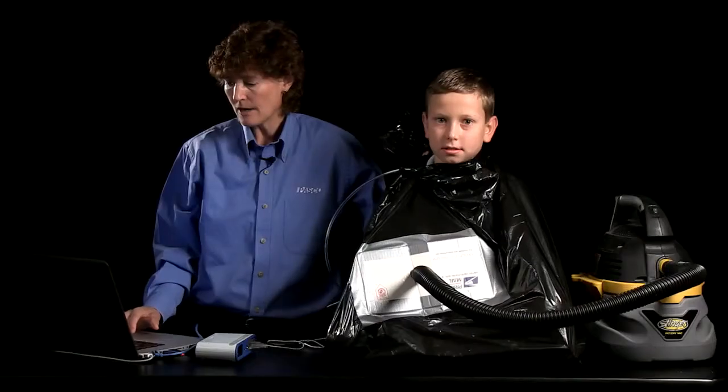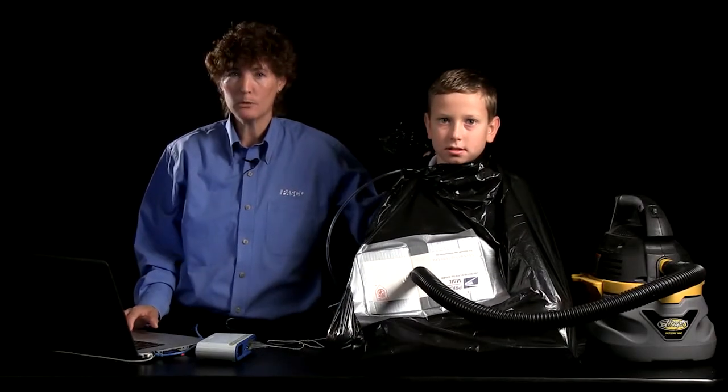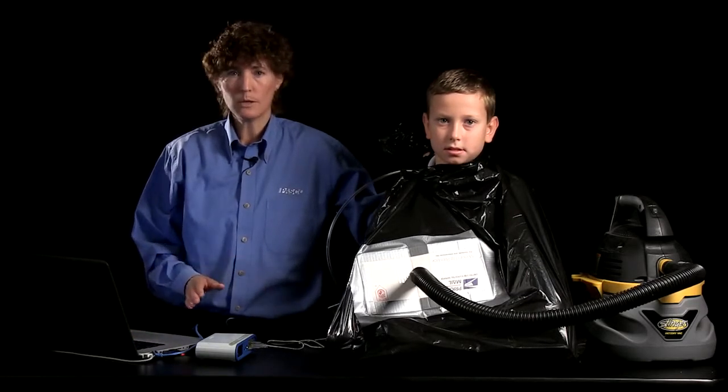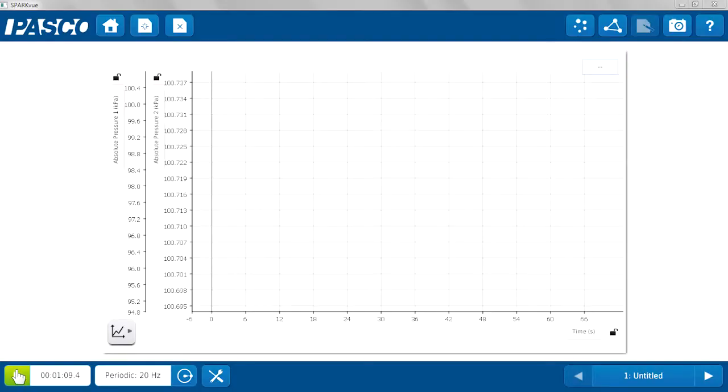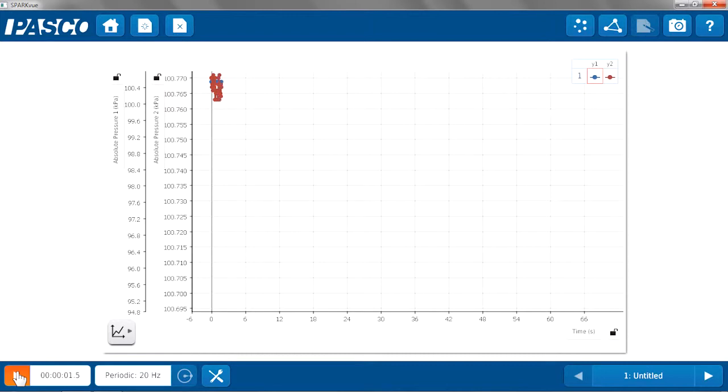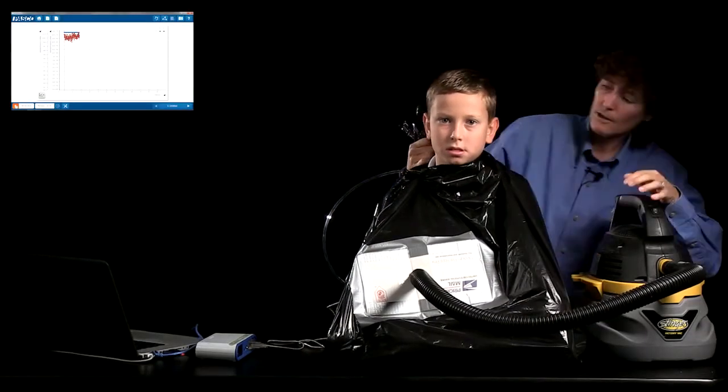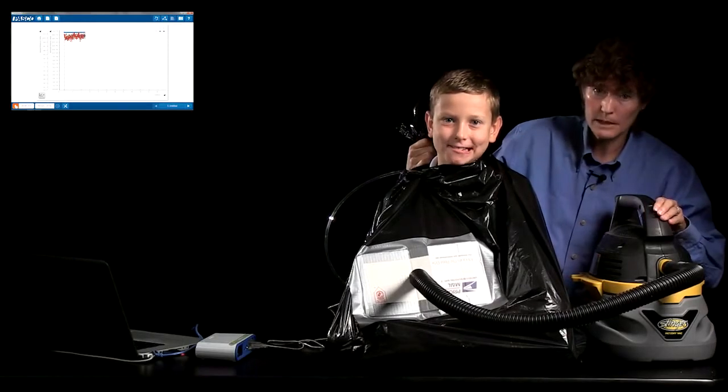And on my graph, I have two pressures displayed versus time. I have multiple y-axes with the pressure from port 1 on one axis and the pressure from port 2 on the other axis. So I'll go ahead and begin recording data. And I can notice that I'm hovering around atmospheric pressure in both cases here, about 101 kilopascals here in Roseville. Now, are you ready for me to turn on the vacuum? Yes. Let the shrink wrapping begin.